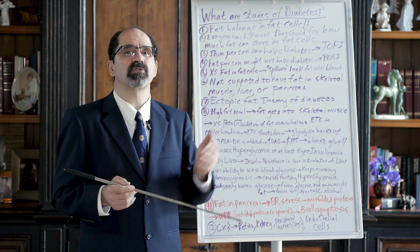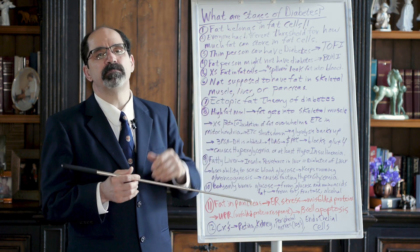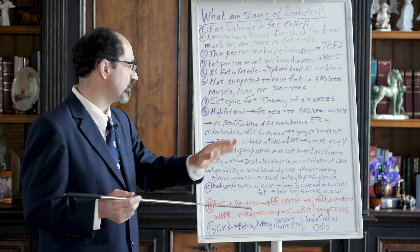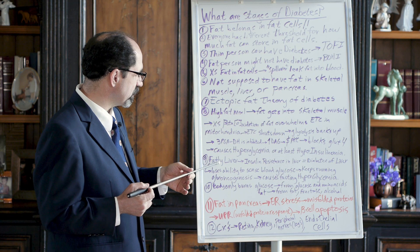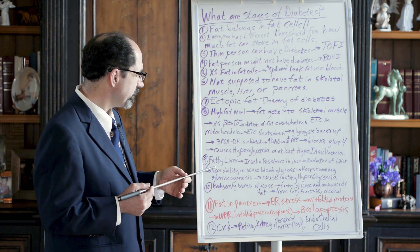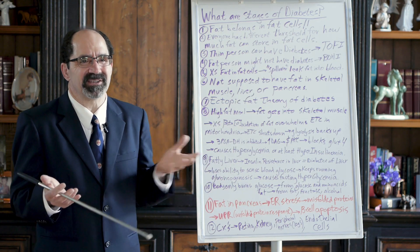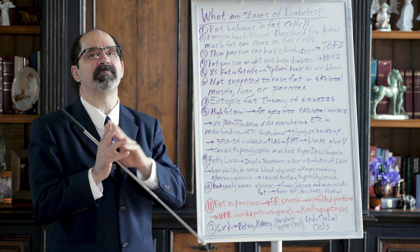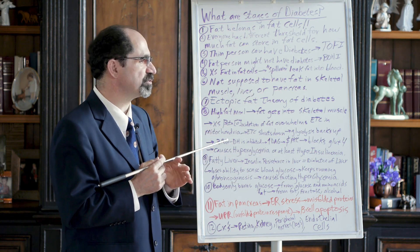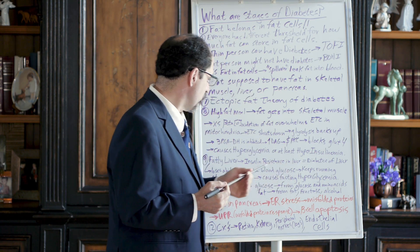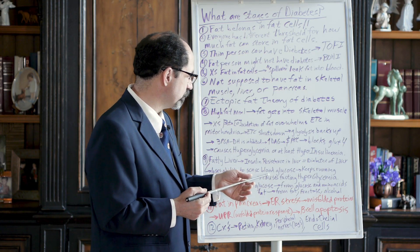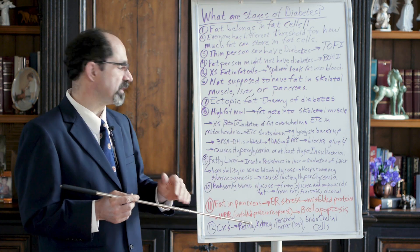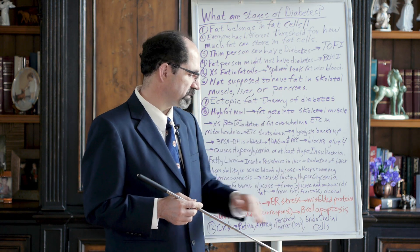Before hyperglycemia occurs, the pancreas will increase insulin output to push glucose into skeletal muscle, but it takes a lot of effort. A person can be hyperinsulinemic for decades before becoming hyperglycemic. Eventually, they're going to start accumulating fat in their liver, and that's a really big deal. Fatty liver is basically diabetes of the liver, and millions of people over the age of 40 have it. What happens is the liver loses its ability to accurately sense blood glucose level and keeps running gluconeogenesis even when it shouldn't, causing elevation in blood glucose when fasting.